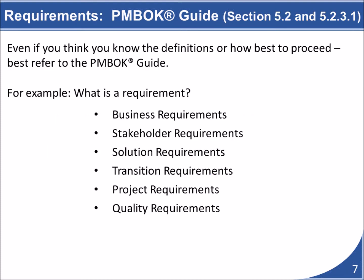Suppose you wanted to know more about the term requirements and how they are used on projects. After consulting Section 5.2 of the guide, you would find that in project management we use the term requirements no less than six different ways. Section 5.2 only provides a brief description of each of the six types of requirements. But now you know the names of the different types of requirements and you can do some follow-on research if needed. In our assignments, you will find specific PMBOK section references in each of the assignment sections.